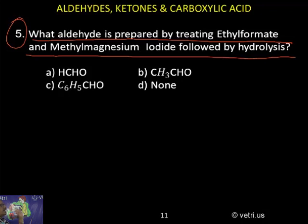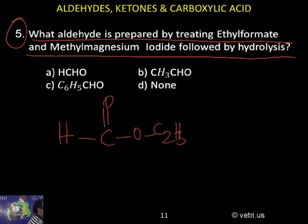Here what is alkene? What aldehyde, how aldehyde can be prepared? By treating ethyl formate. So they are saying ethyl formate, the formula you can write here. This is the ethyl formate. And another is methyl magnesium iodide.